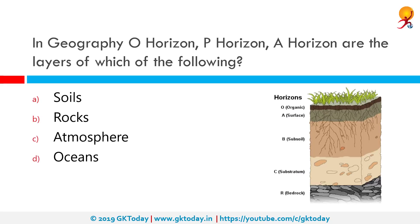In geography, O horizon, P horizon, and A horizon are layers of which of the following? The correct answer is soils. If we take a bit of land and look at the soil, we find that it consists of three layers which are called horizons. If you see the diagram, you can see the strict division between the different layers — these are the horizons.